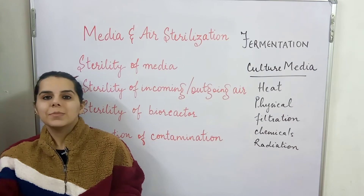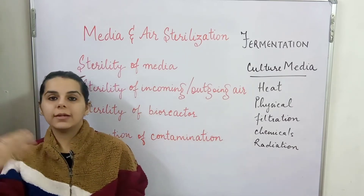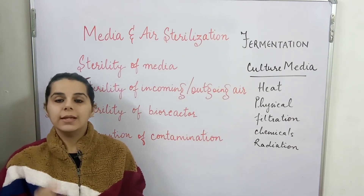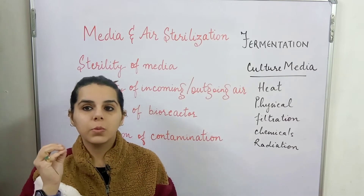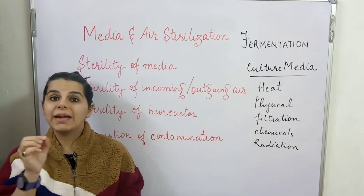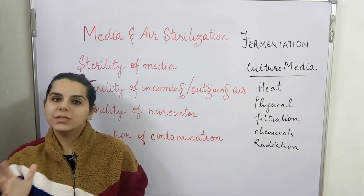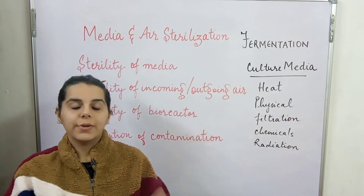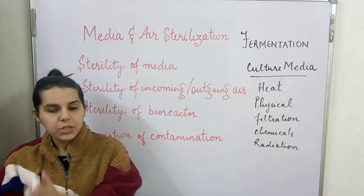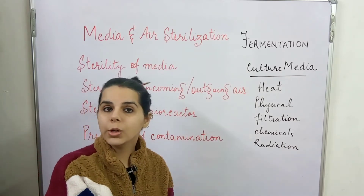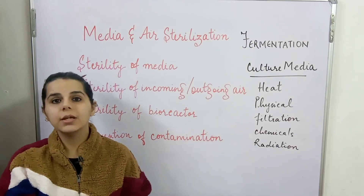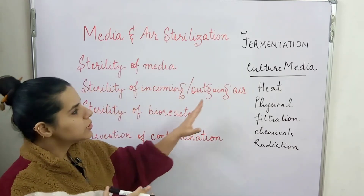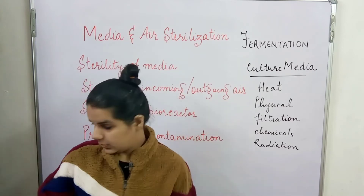There are cases where we cannot use heat treatment — when we are using heat-labile substances. If the media includes constituents that are sensitive to heat, the stability of those nutrients might get disturbed. In those cases we use filtration. So filtration is used in processes where heat treatment cannot be applied due to the heat liability of the constituents. Heat treatment will be discussed first.